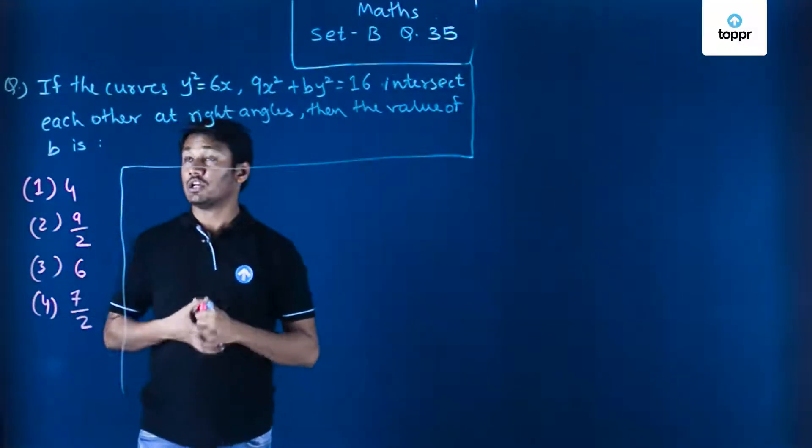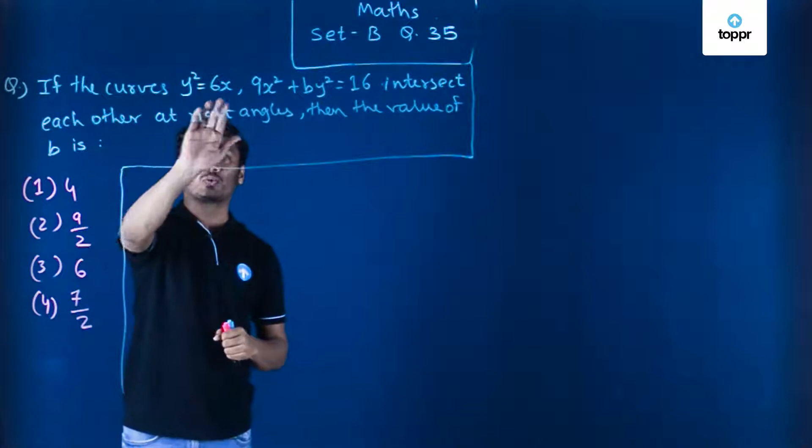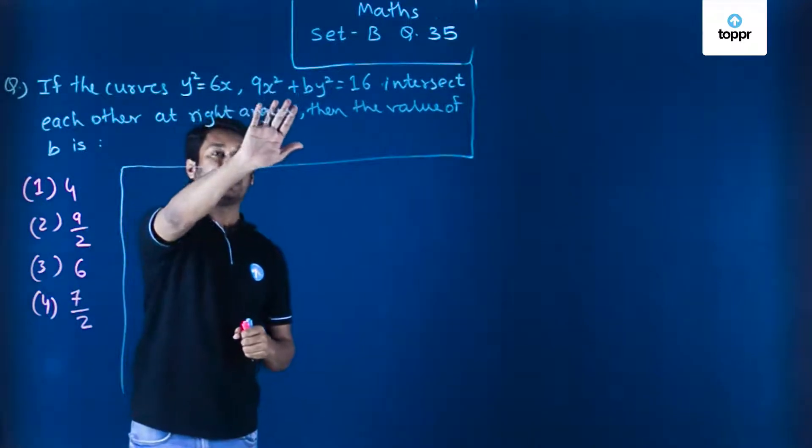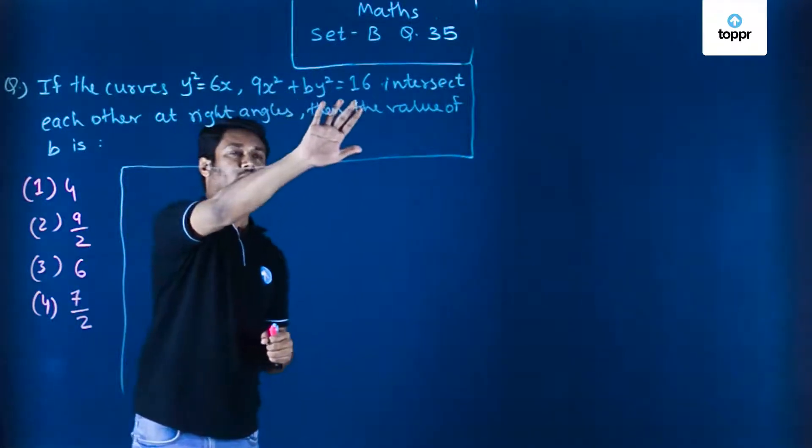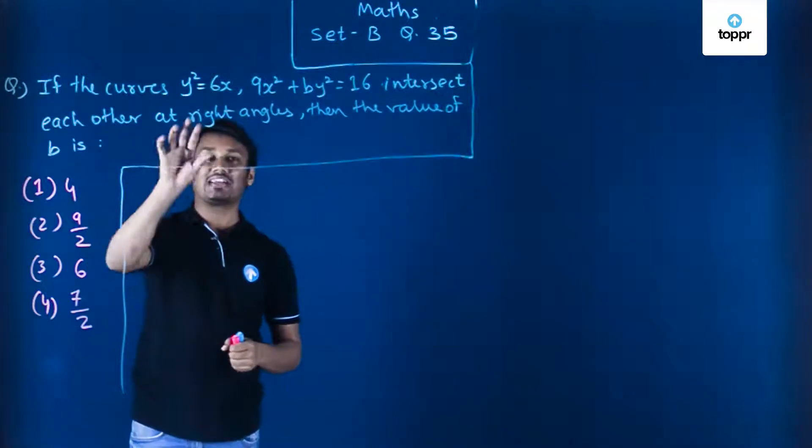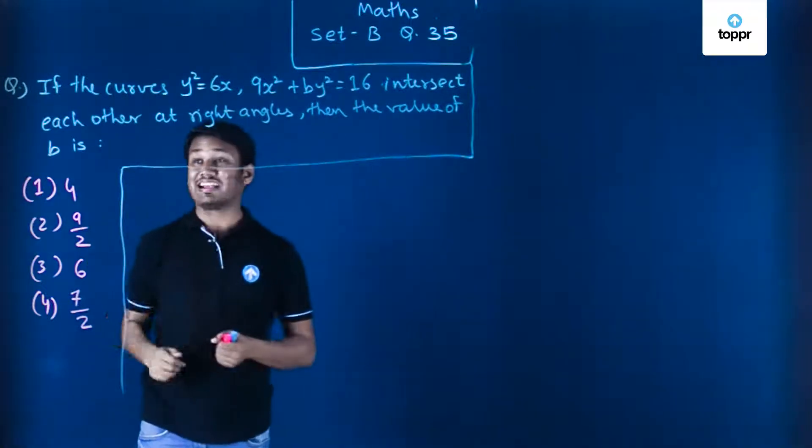Set B question number 35. The question says if the curves y² = 6x, 9x² + by² = 16 intersect each other at right angles, then find out the value of b.